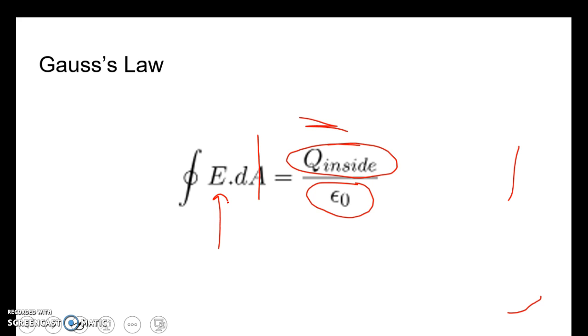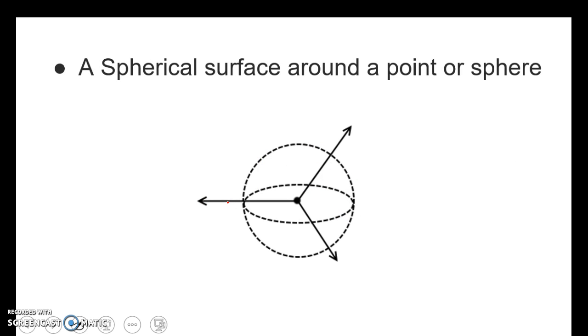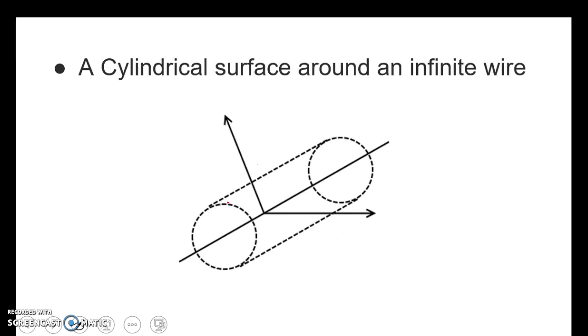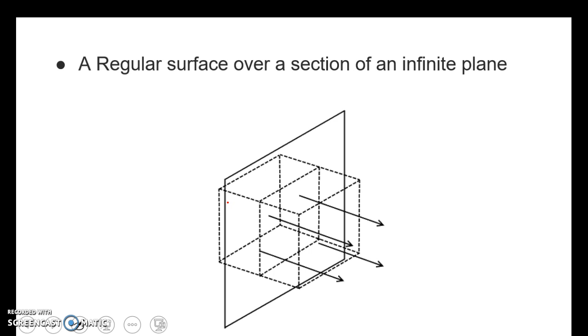Cases where the electric field is coming straight out through the surface evenly. These are, for example, a spherical surface around a point or sphere, a cylindrical surface around an infinite wire, or a regular surface over a section of an infinite plane. These are the Gaussian surfaces.